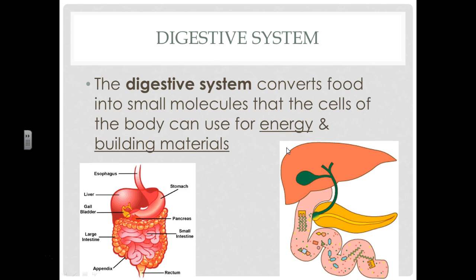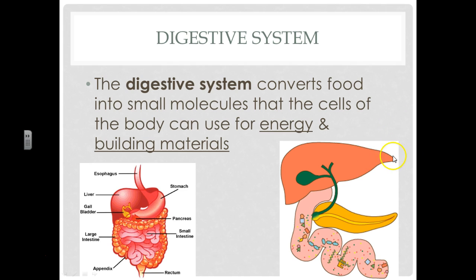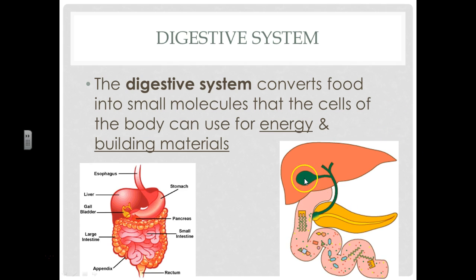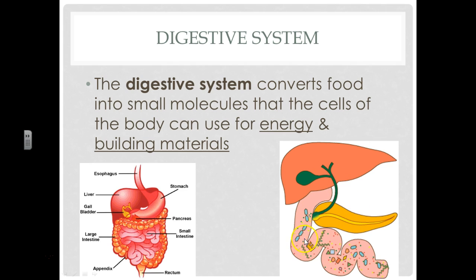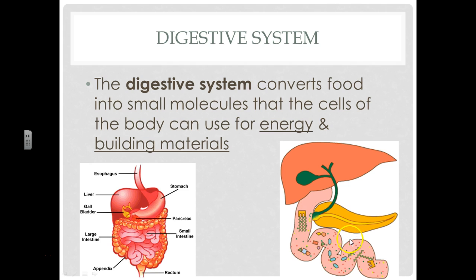The digestive system converts food into small molecules that the cells of the body can use for energy and building materials. Here we can see parts of your digestive system. Just a little bit after the stomach, we have the liver, small intestine, pancreas, and gallbladder right there. You can see they're secreting chemicals that are breaking down the food as it goes through there, into those individual pieces which your body can reassemble into whatever it needs. That's the point of the digestive system.